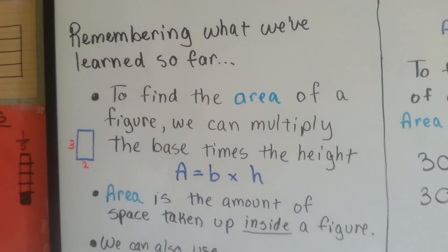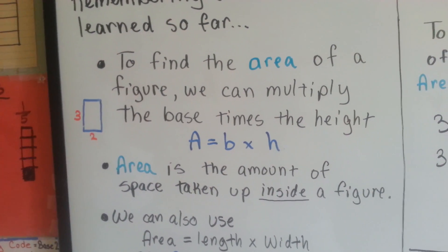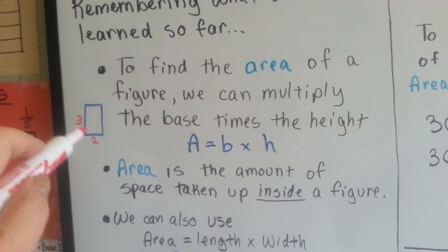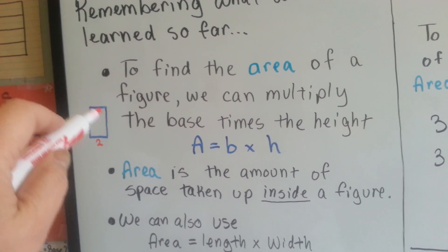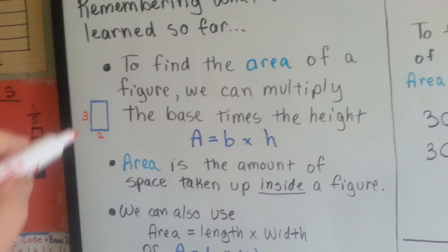Do you remember that to find the area of a figure, we can multiply the base times the height, 2 times 3. That means the area inside of this rectangle is 6.